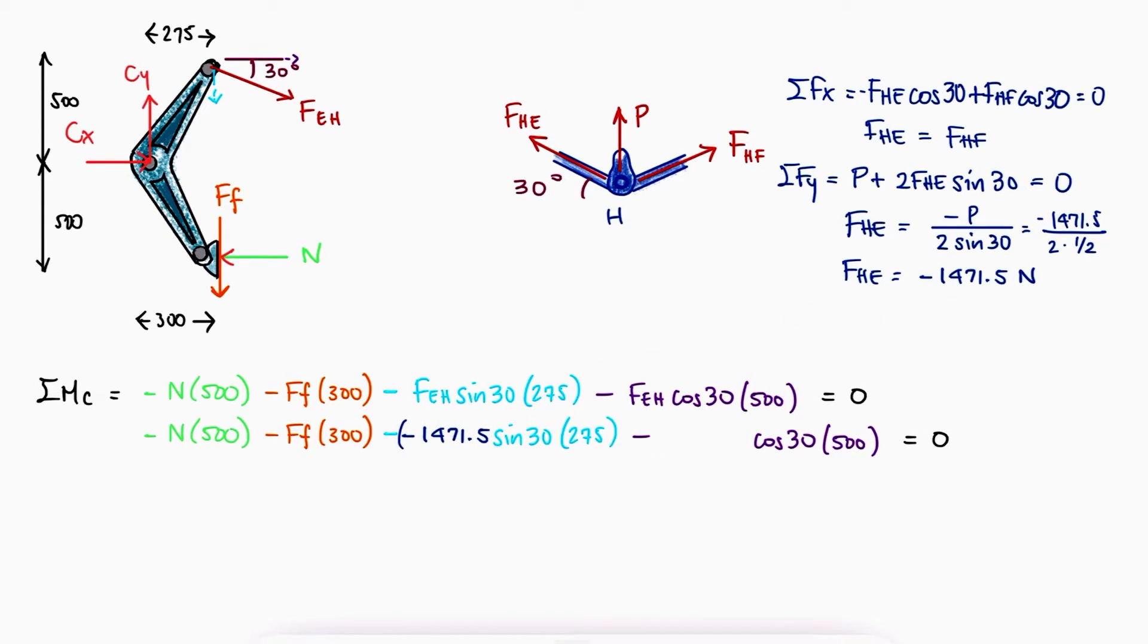Substituting the value of FeH and substituting the friction force as mu n, we see that we need to find the magnitude of the normal force.